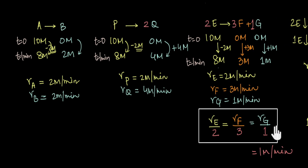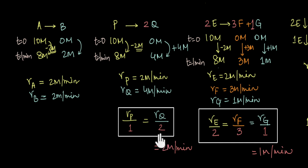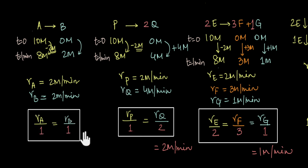Similarly, even in the reaction P→2Q, if we divide these rates by their stoichiometric coefficients, the values come out to be the same. R(P)/1 is 2 molar per minute and R(Q)/2 is also 2 molar per minute. This relation is always true because by the time 1 molar of P completely reacts, 2 molar of Q would have formed. So the rate of formation of Q is 2 times the rate of disappearance of P. And for the simple A→B reaction, R(A)/1 = R(B)/1, which is 2 molar per minute.